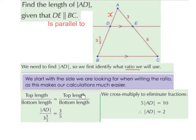The top length on the right-hand side is going to be 3, so we swap top length for 3 on the right-hand side. And then the bottom length on the right-hand side is going to be 5, so we swap bottom length for 5 on the right-hand side.